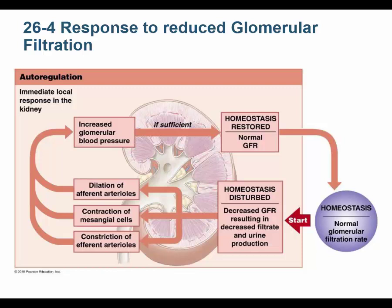The regulation of GFR involves the juxtaglomerular apparatus. Normal GFR is 125 mL per minute. GFR can be calculated from a 24-hour urine collection — it's more accurate than a random urine sample because a random sample requires too many assumptions about frequency of urination.